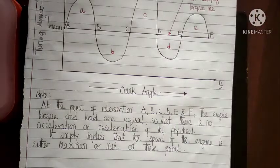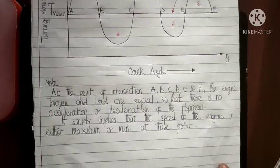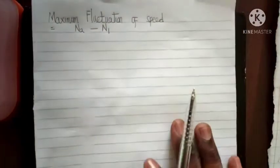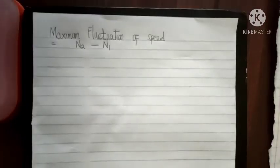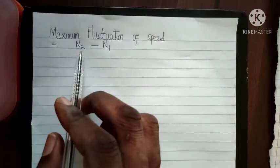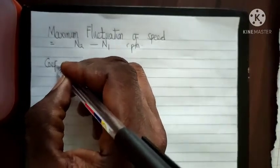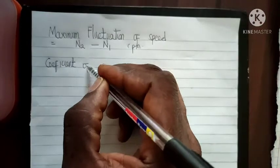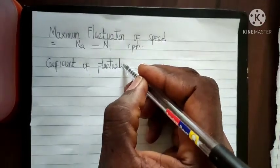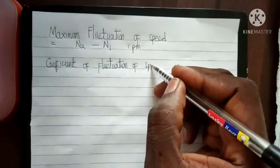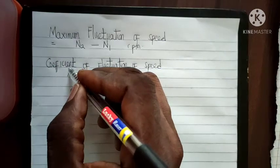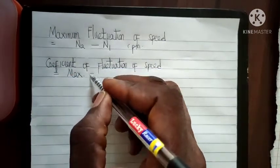The maximum fluctuation of speed is the difference between the maximum speed and the minimum speed, represented in revolutions per minute. We also have the coefficient of fluctuation of speed, which is the difference between the maximum fluctuation of speed divided by the mean speed of the engine.